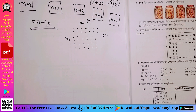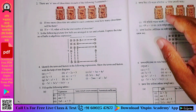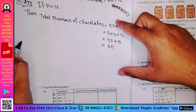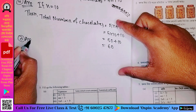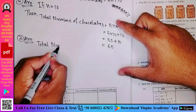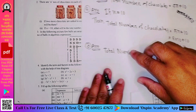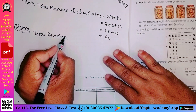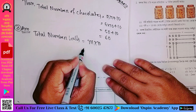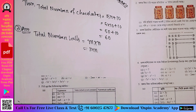So the student's answer: total number of balls equals m into n, that means mn. That is the answer.